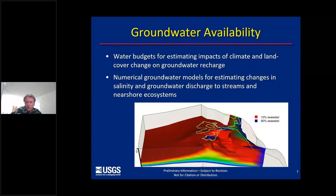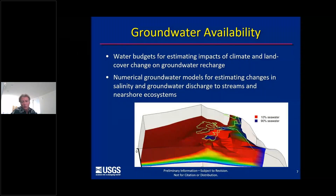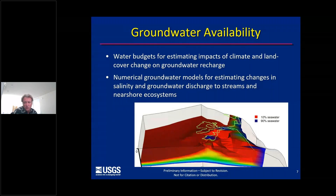Groundwater availability has been and will continue to be a major water resource issue here in Hawaii. As a result, we have been developing improved water budgets for estimating impacts of climate and land cover change on groundwater recharge. In addition, we have been developing numerical groundwater models to support management decisions related to saltwater intrusion, groundwater levels, and reduction in groundwater discharge to streams and near-shore ecosystems. These efforts have been supported by agencies including the USGS Water Availability and Use Science Program, the US Department of the Interior Pacific Islands Climate Adaptation Science Center, the State of Hawaii Commission on Water Resource Management, Maui County Department of Water Supply, and the Honolulu Board of Water Supply.